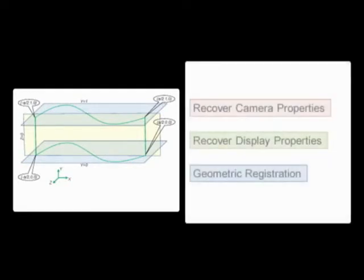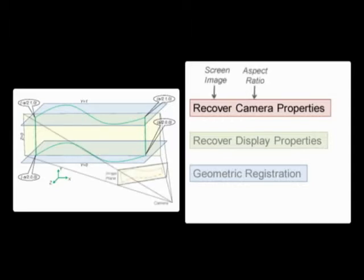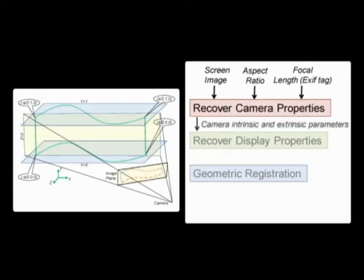Our method has three steps. In the first step we recover both the intrinsic and extrinsic camera parameters. In order to do this we take a single image of the display surface with the camera and measure the aspect ratio. The camera parameters are estimated using a two-phase nonlinear optimization technique. To provide a reasonable initial estimate of the camera's focal length we use the focal length value from the EXIF metadata tags embedded in the camera image.